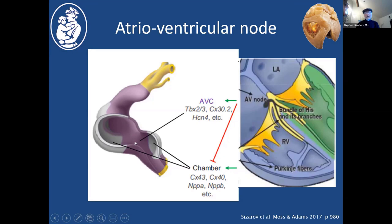This primitive region maintains its slow-conducting, poorly contractile nature. TBX2 and TBX3 — as we saw in the sinus node — are expressed here, inhibiting formation of usual working myocardium and maintaining its primitive slow-conducting character, inducing connexin 30.2 and HCN4, because the AV node does have potential automaticity. Chamber myocardium, by contrast, expresses fast-conducting connexins and atrial natriuretic peptide. The AV node develops at the junction between the AV canal myocardium and the ventricular myocardium, whereas the penetrating bundle and bundle branches are derived from ventricular myocardium — not from the AV canal myocardium. So they have separate origins.